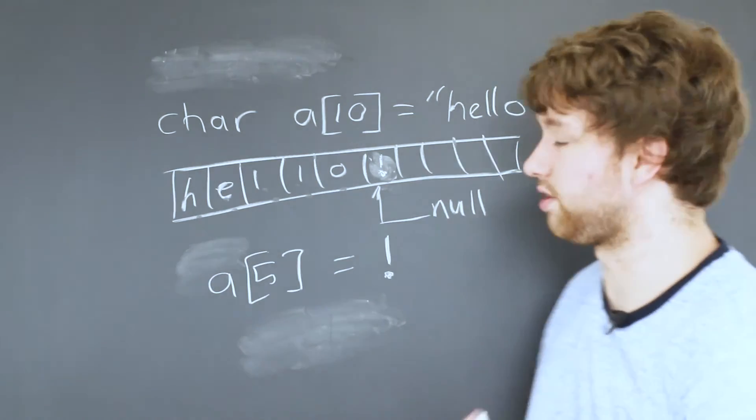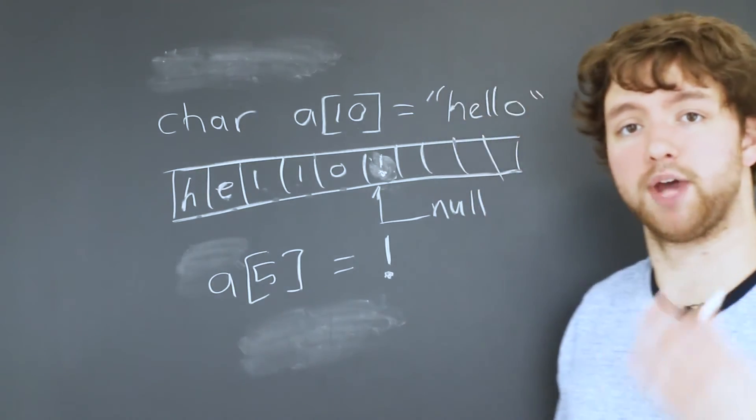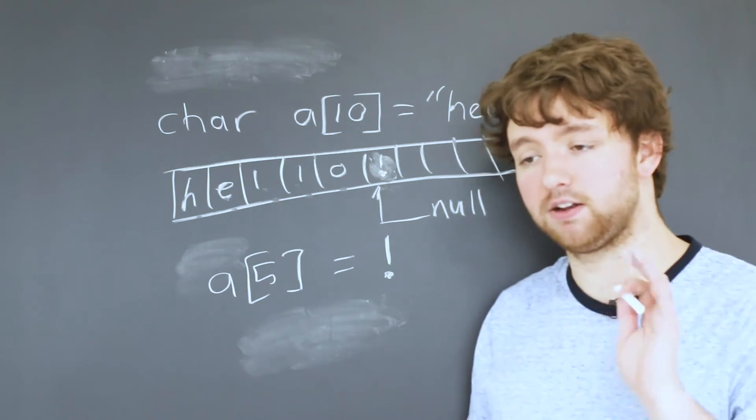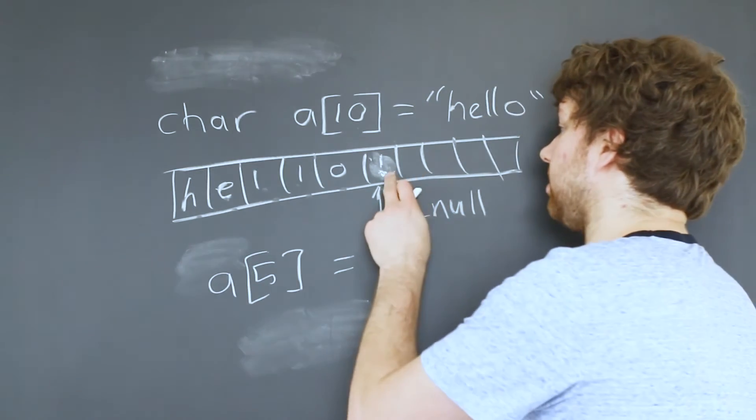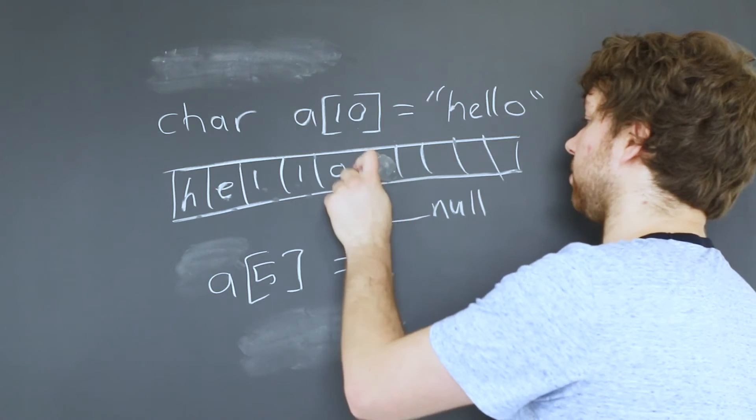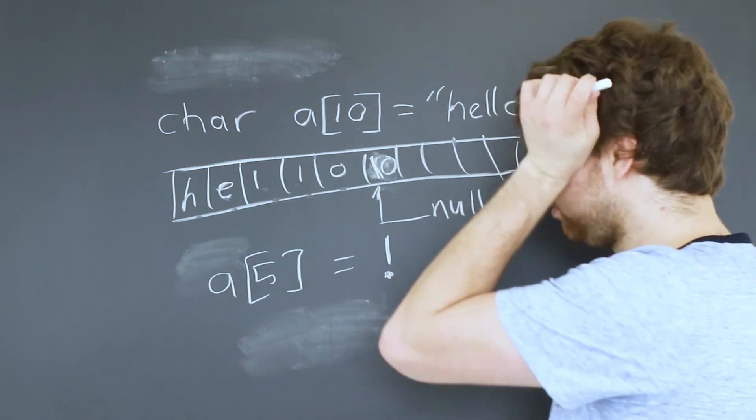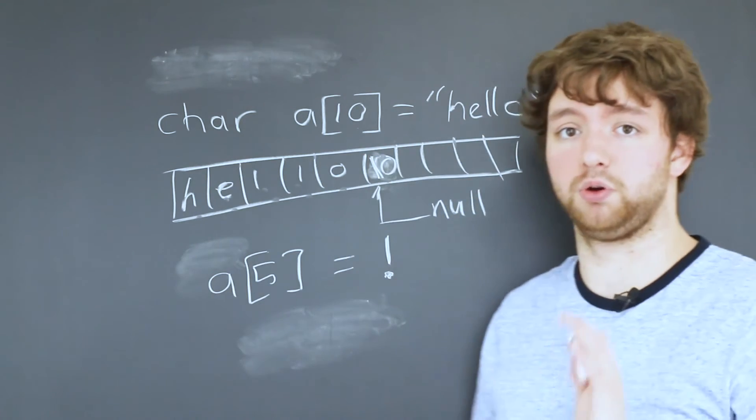So hopefully that helps you guys understand strings a little bit better. The main thing you got to know is just that there is a null character at the end, which looks like a backslash zero, and you never want to overwrite that.